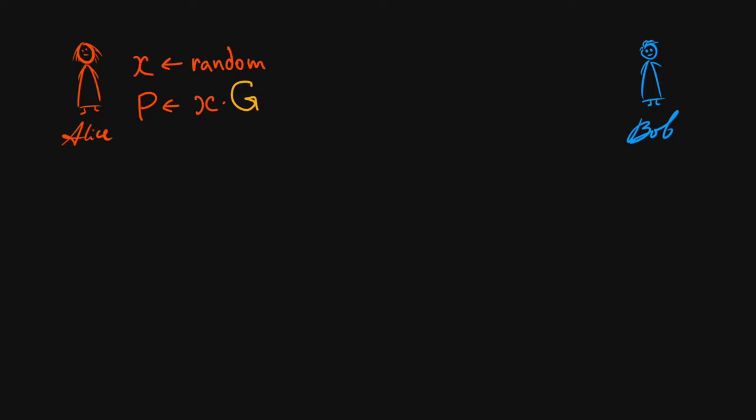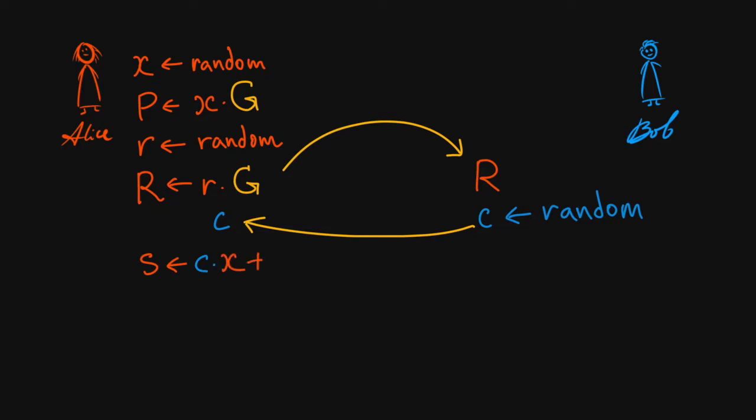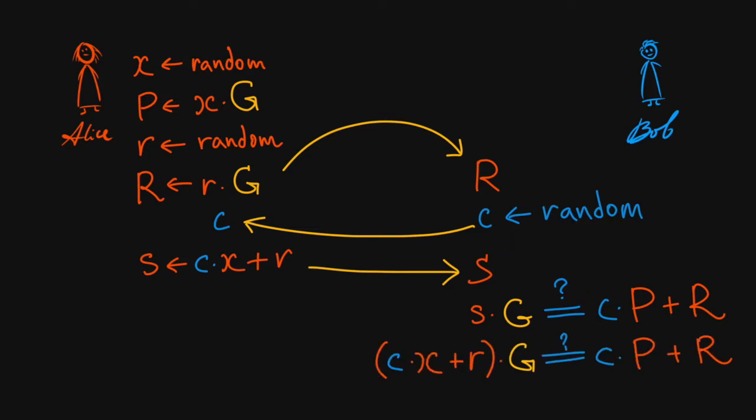Let's see how this works. If Alice knows the private key, she honestly commits to her nonce R, sends the commitment to Bob, and receives a random challenge. Then she multiplies her private key by the challenge, adds nonce, and sends the resulting siglet to Bob. Bob does the same computation with points P and R, and compares the result with S by G. If this succeeds, Alice has successfully proven her knowledge of the private key.